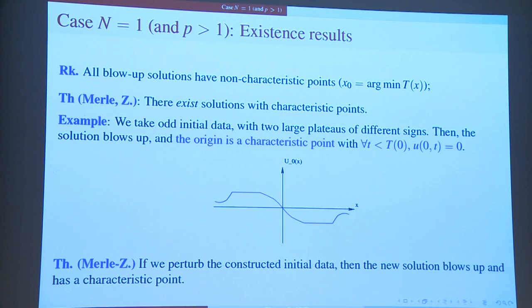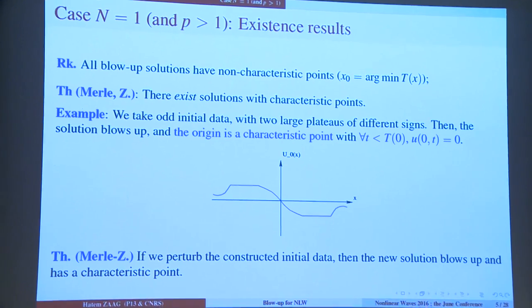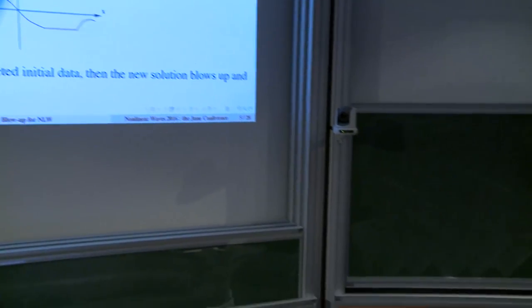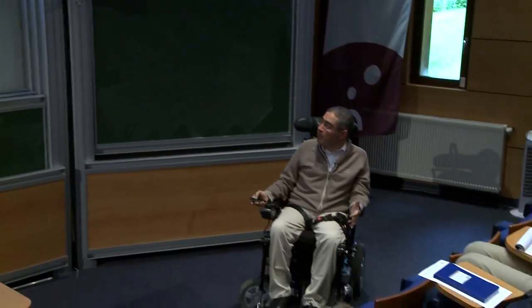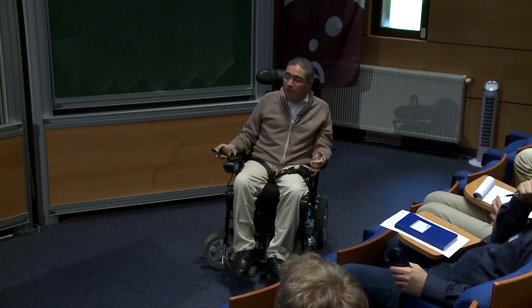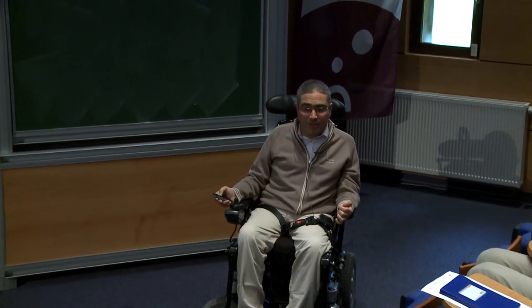Having characteristic points is connected to sign-changing. An important property in one space dimension: this solution is stable, meaning that you may perturb it, breaking the symmetry, and still have a characteristic point close to 0. So this is a robust property. Having a characteristic point with one change of sign is stable with respect to initial data.